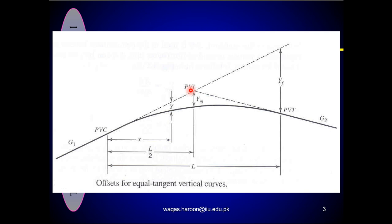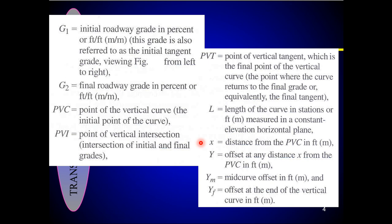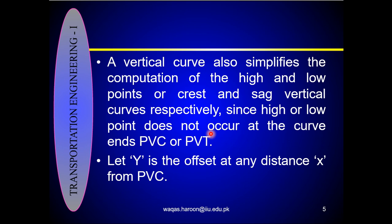PVC is known as the initial point of the curve — PVC stands for Point of the Vertical Curve. PVI is the intersection of the initial and final grades — PVI stands for Point of the Vertical Intersection. PVT is the point where the curve returns to the final tangent — PVT stands for Point of the Vertical Tangent. L is the length of the curve in stations, feet, or meters, measured in a horizontal plane at constant elevation.